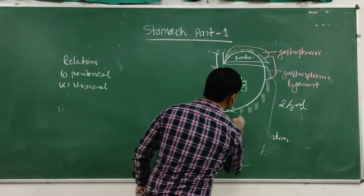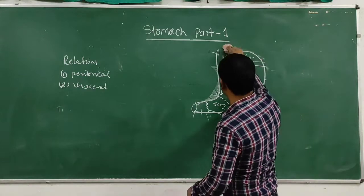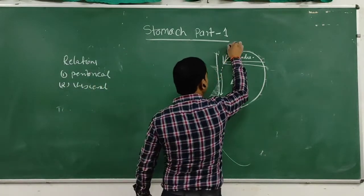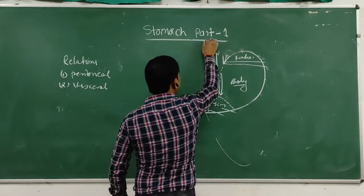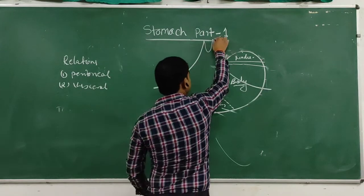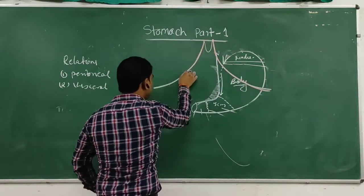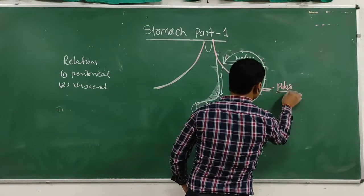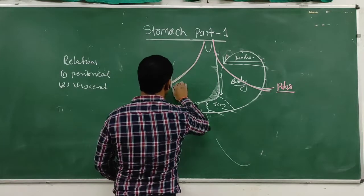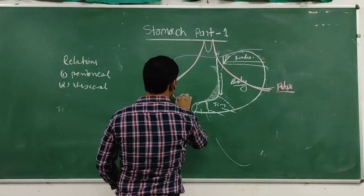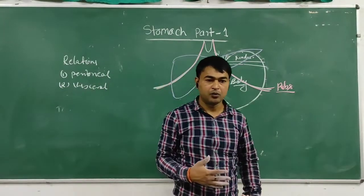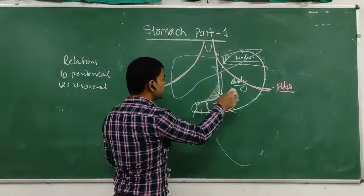The visceral relations of the stomach: the anterior surface is related to the costal cartilage and ribs, the anterior surface of the liver, and the muscles of the anterior abdominal wall.